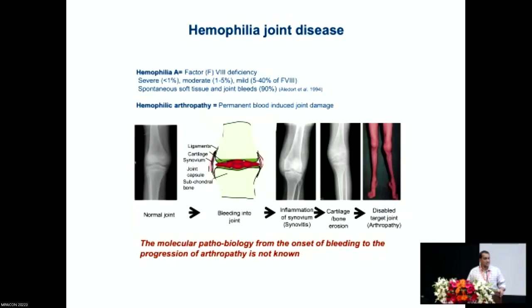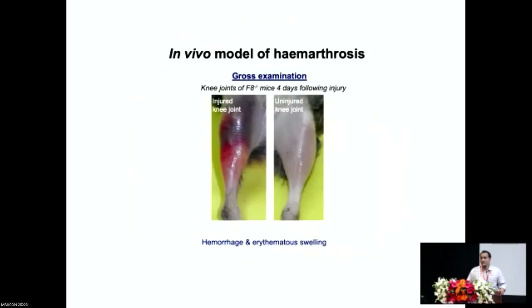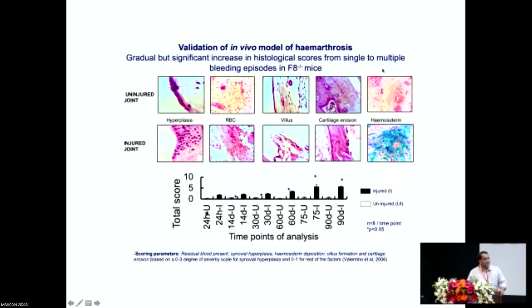Hemophilia A mice are not spontaneous bleeders, so we developed a protocol involving needle stick injury of the articular cartilage joint. When you injure these joints, they result in hemorrhage and erythematous swelling. We followed a scoring system, validating hemophilic arthropathy by studying synovial cell hyperplasia, RBC deposition, villus formation, cartilage erosion, and hemosiderin deposition. The injured joints had substantially higher scores.